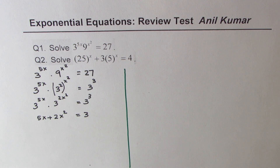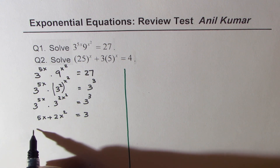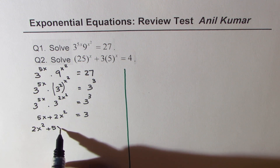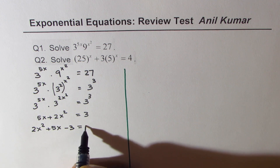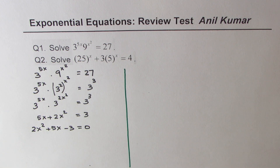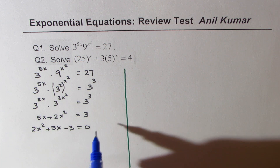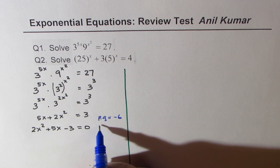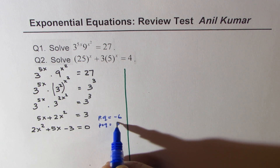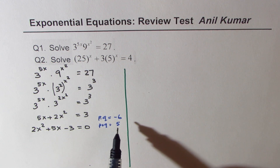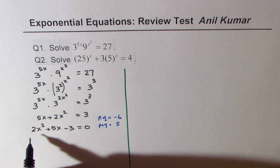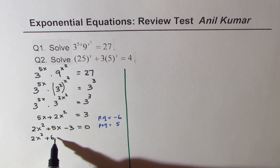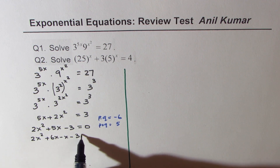That gives us a quadratic equation to solve. We can rewrite this as 2x squared plus 5x minus 3 equals 0. This can be factored using the product and sum method — we want two numbers with a product of negative 6 and a sum of 5, so the combination is positive 6 and negative 1. We rewrite 5x as 6x minus x: 2x squared plus 6x minus x minus 3 equals 0.